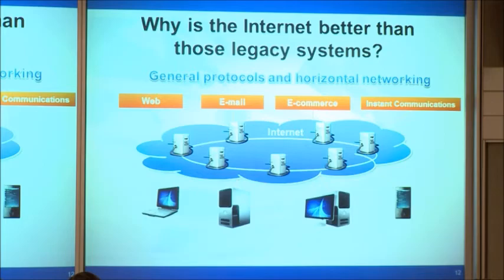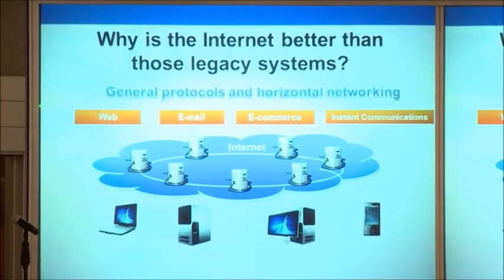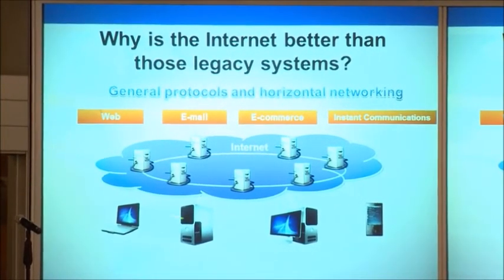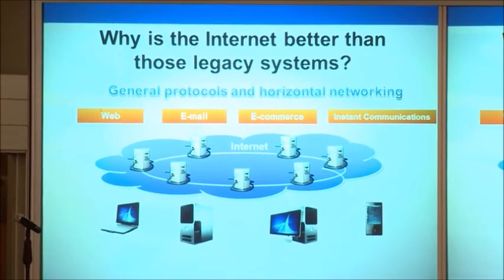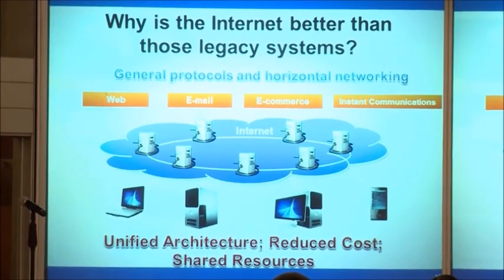What the Internet did, rather than each of those legacy systems for special purposes being vertically integrated, is cut through in the middle horizontally. On top you have all those services — email literally replacing telegram, the web replacing the broadcast system. In the middle you can transmit anything to anything, anywhere to anywhere, through the Internet. The protocol is general, and in networking it is horizontal — everything can plug in. This is why the Internet is so great: it has a unified architecture for all, and tremendously reduced cost because resources are shared.